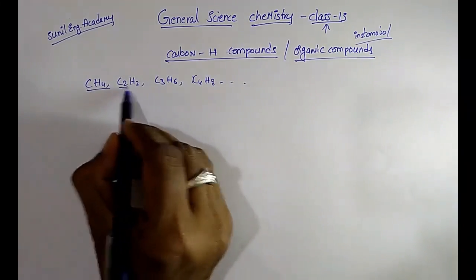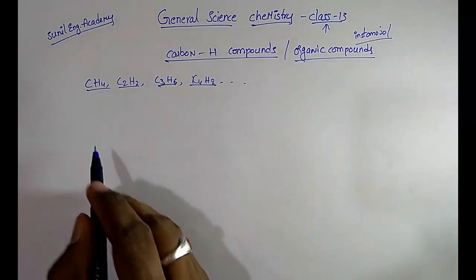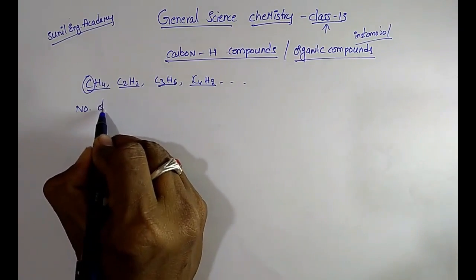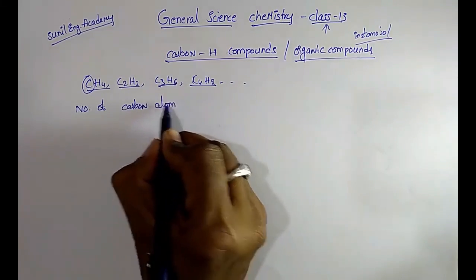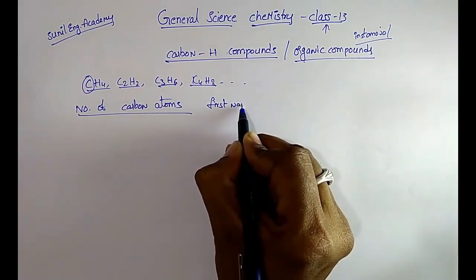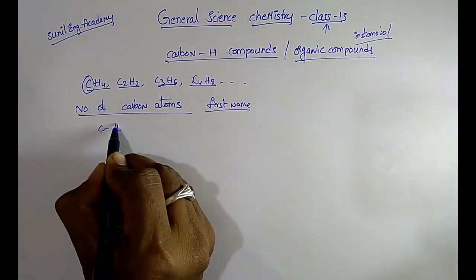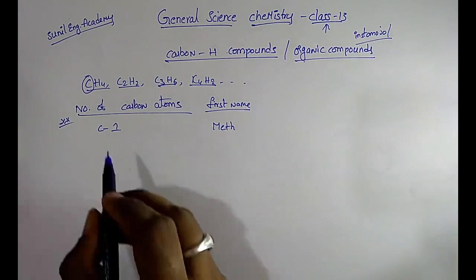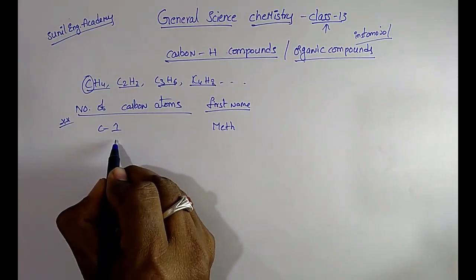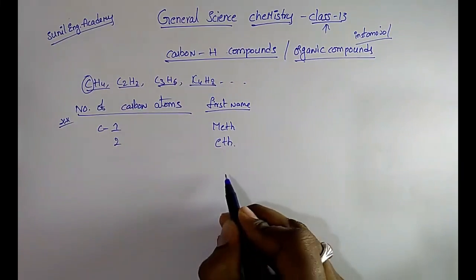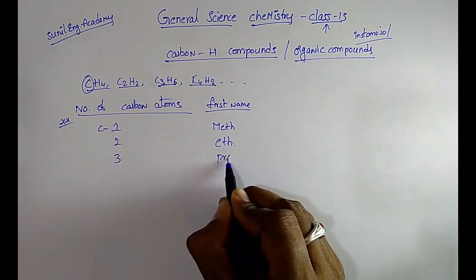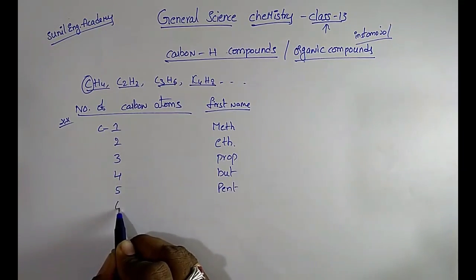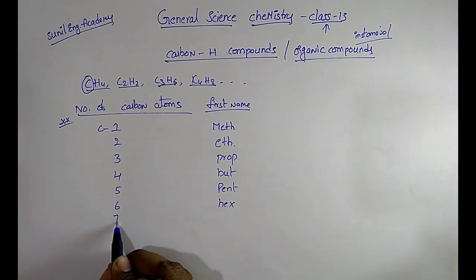The terminology is very, very important. The first name is given by the number of carbon atoms. If the number of carbon atoms is one, the first name is 'meth'. If two, it is 'eth'. If three, it is 'prop'. Four means 'but'. Five means 'pent'. Six means 'hex'.